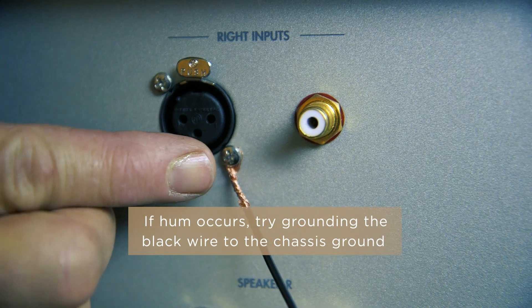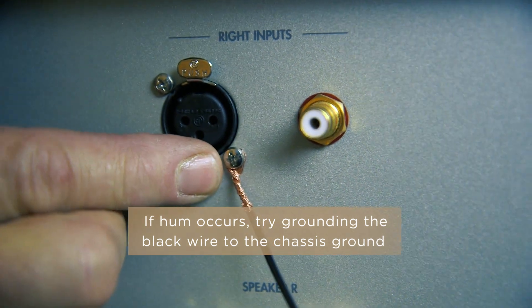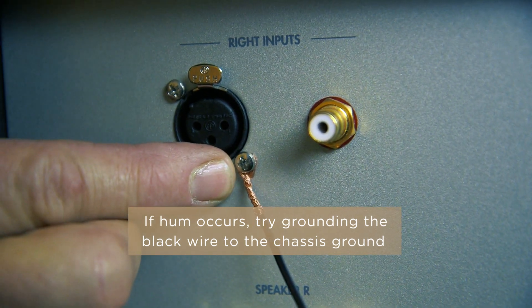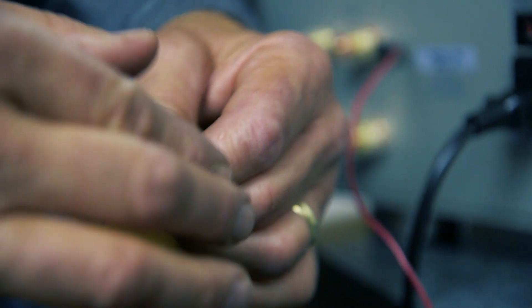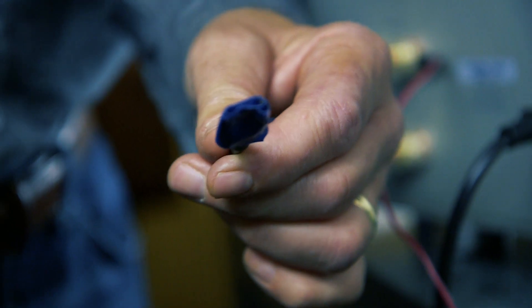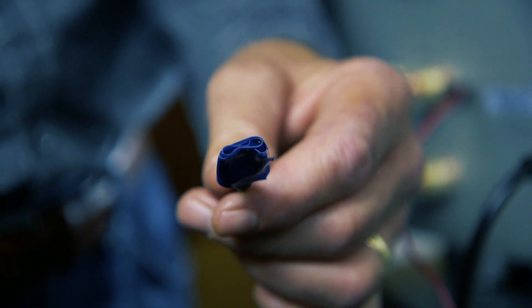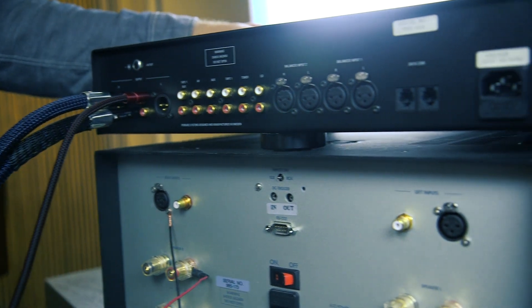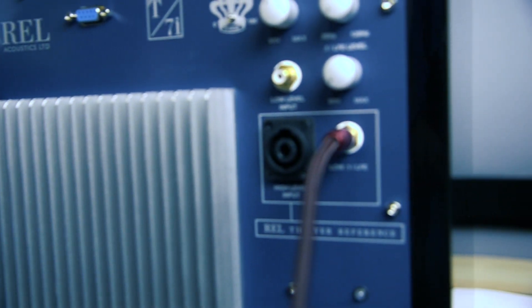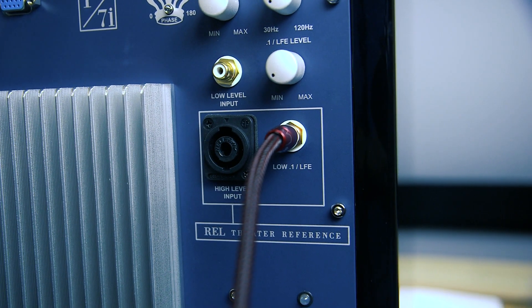If hum occurs using this method, there's a grounding problem. Try grounding the black wire to a chassis ground if your amp has one. The other option to stop the humming is to remove the black wire, letting it float, and connect an RCA cable between an unused RCA output on the preamp or amplifier and the REL's LFE input. If done correctly, the REL will be getting a ground signal from the RCA cable.